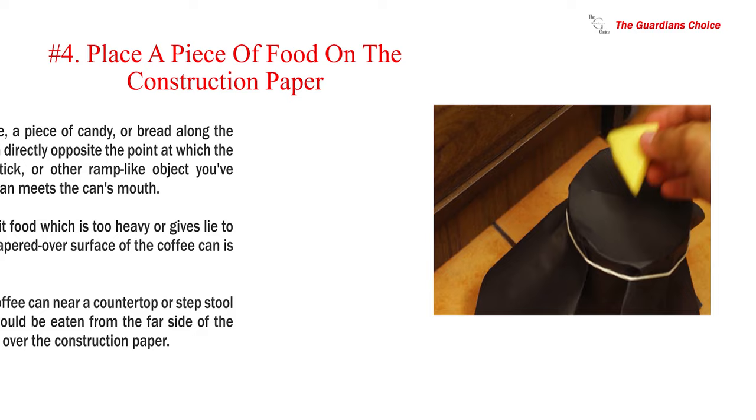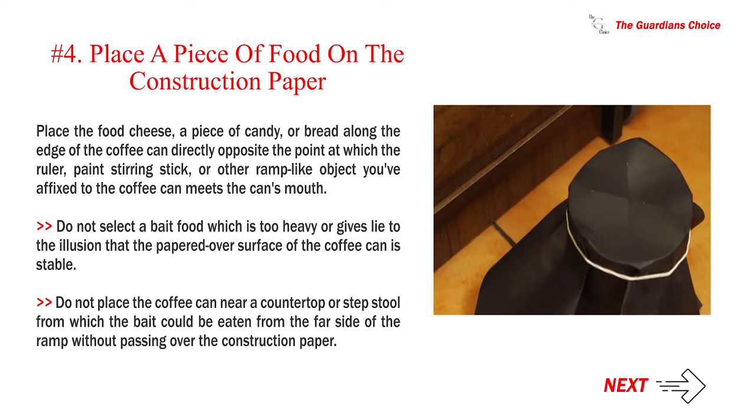Number 4: Place a piece of food on the construction paper. Place the food cheese, a piece of candy, or bread along the edge of the coffee can directly opposite the point at which the ruler, paint stirring stick, or other ramp-like object you've affixed to the coffee can meets the can's mouth. Do not select a bait food which is too heavy or gives lie to the illusion that the papered-over surface of the coffee can is stable. Do not place the coffee can near a countertop or stepstool from which the bait could be eaten from the far side of the ramp without passing over the construction paper.